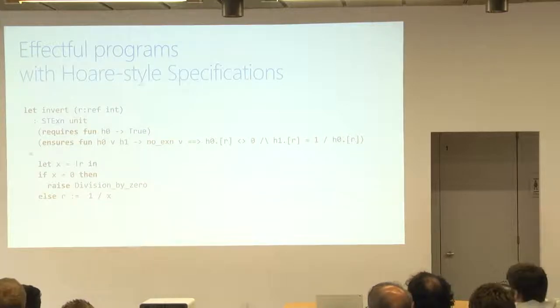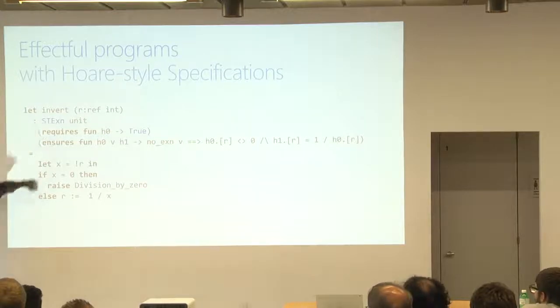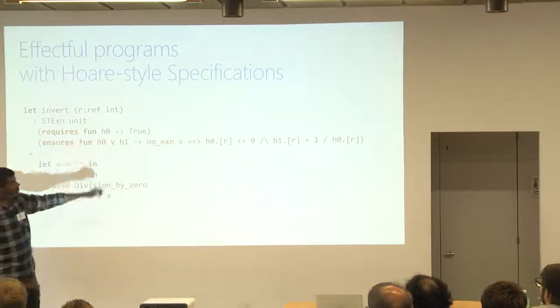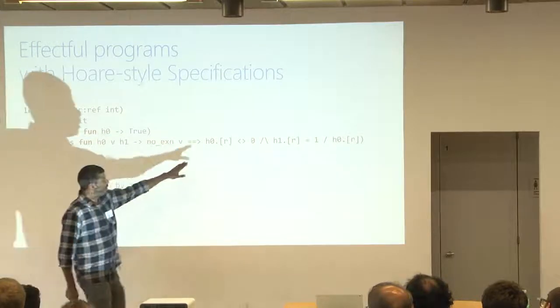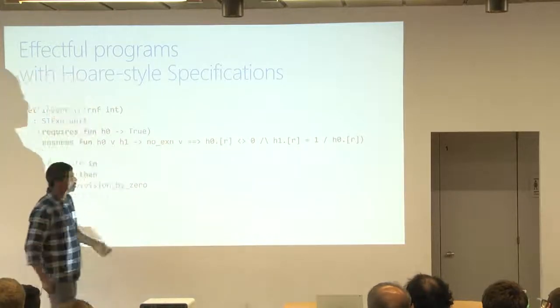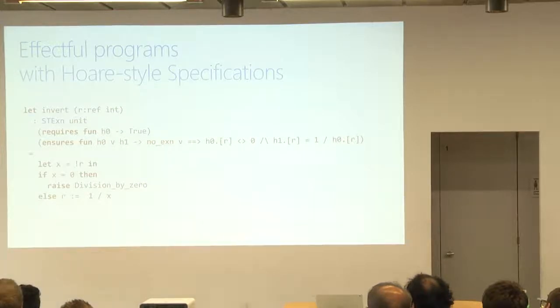You can write a program like this, and you can give it a spec in F-star that says, Invert is a function that takes a reference, it has a reference to an integer, it may have effects of state and exception. And a post condition that says, if the function doesn't raise an exception, then the input reference is not zero, and the final contents of the reference are the inverse of the initial reference. Or you can give it another spec and say, if the client can prove that the initial value of the reference is not zero, then this function never raises an exception, and in fact inverts the argument.